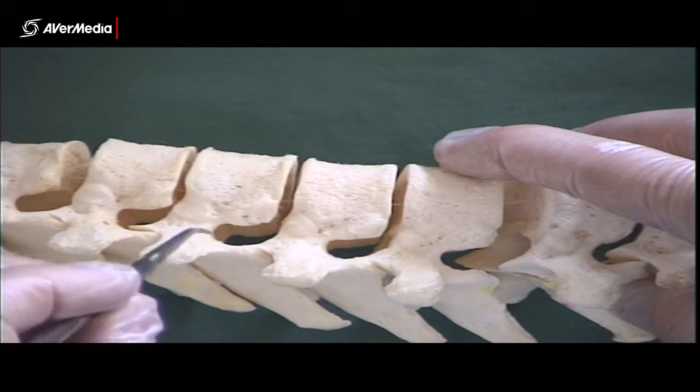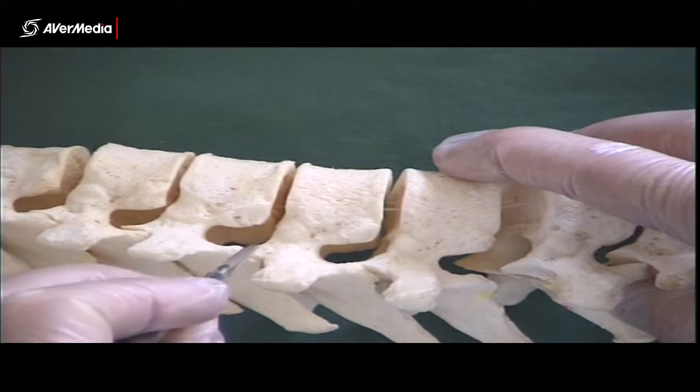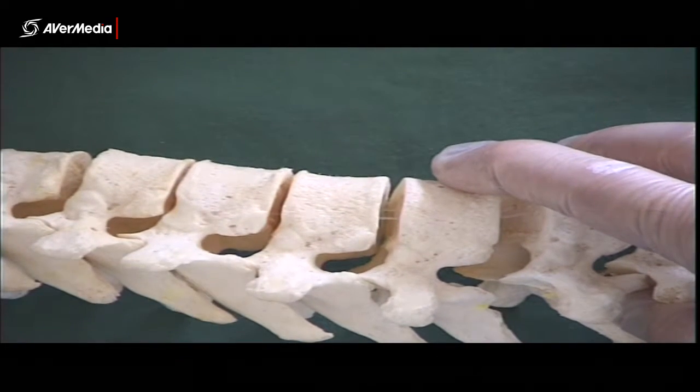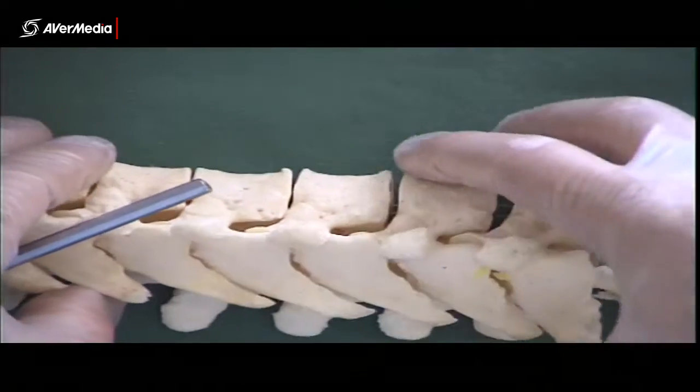So when there are two vertebrae next to each other, the combination of the bones makes a foramen here on the lateral aspect. That's an intervertebral foramen, and remember foramina is just the plural of that.